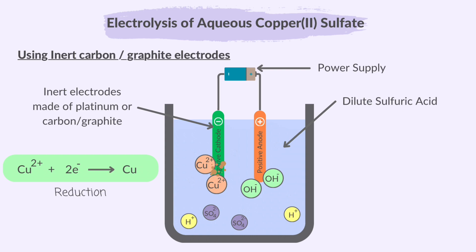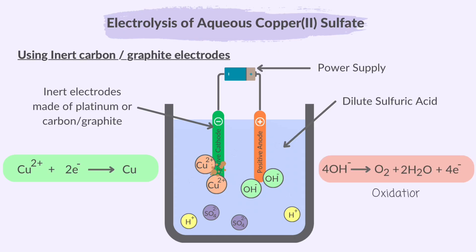The half equation for the reaction at the cathode is: Cu²⁺ + 2e⁻ → Cu. Sulfate and hydroxide are both anions, so both are attracted to the anode, but only one gets oxidized. OH⁻ loses electrons and is oxidized to form oxygen gas. This is the half equation for the reaction at the anode.